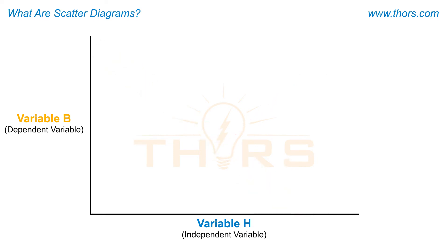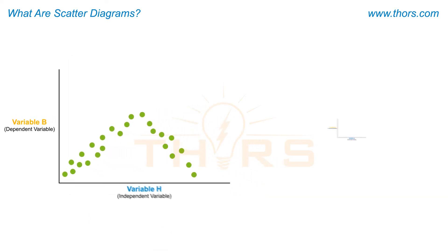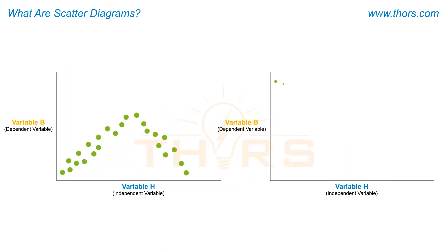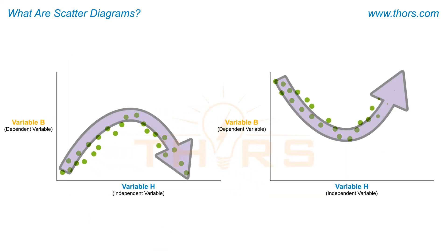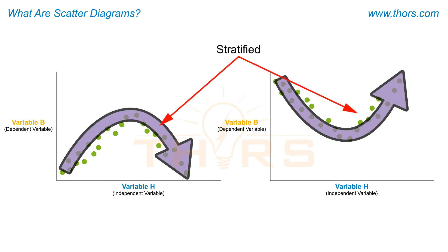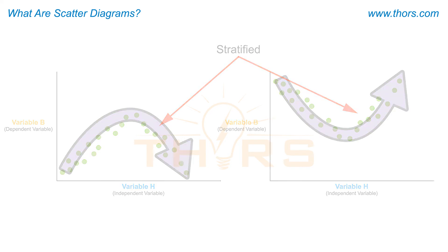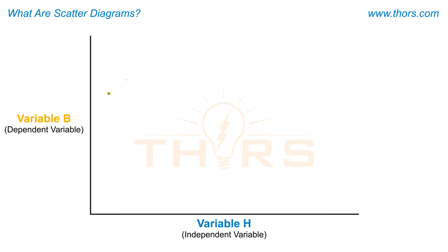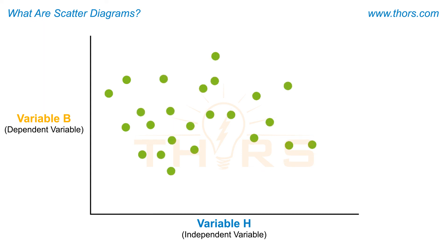When the dependent variable initially increases and then decreases, or vice versa, such that the data clearly exhibits the shape of a curve, then the data are said to be stratified. The data then need to be separated to better understand the relationship. When there is no pattern seen between the two variables such that the data exhibits a random behavior, then the relationship is said to have no correlation.